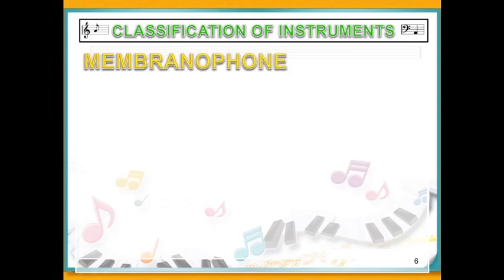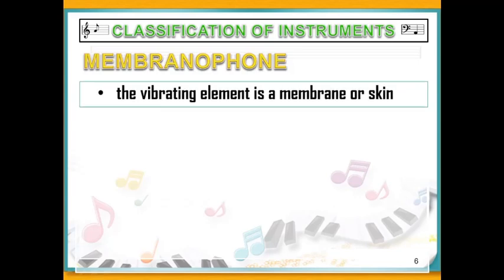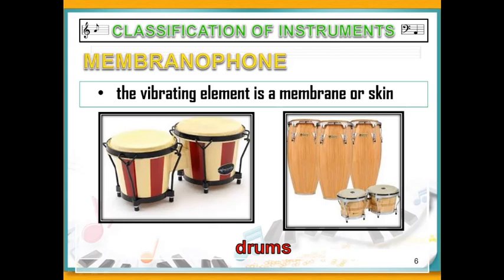The fourth classification of instruments are drums, or basically known as Membranophones. The vibrating elements of these instruments are the membrane — usually synthetic plastics or organic material like animal skins. Some drums are made of plastics, and some are made from animal skins.